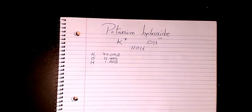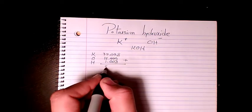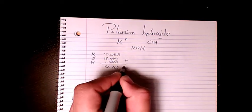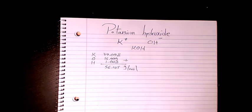all: 39.098 plus 15.999 plus 1.008, that makes it 56.105 grams per mole. So that's the molar mass of potassium